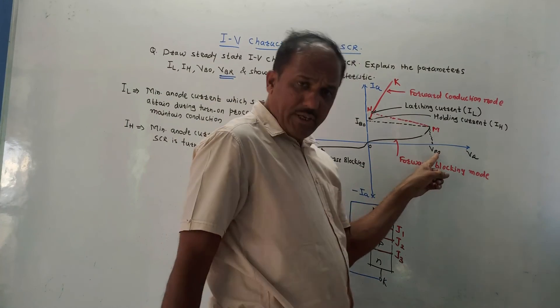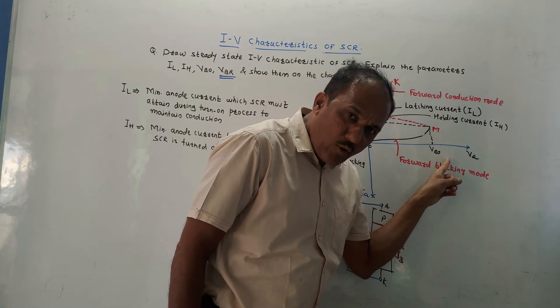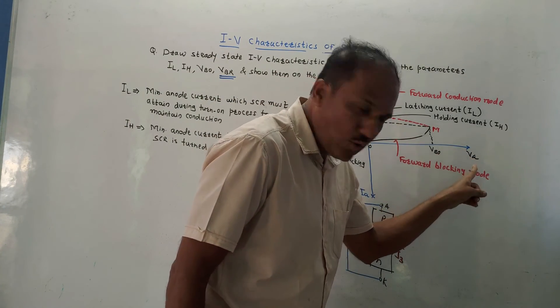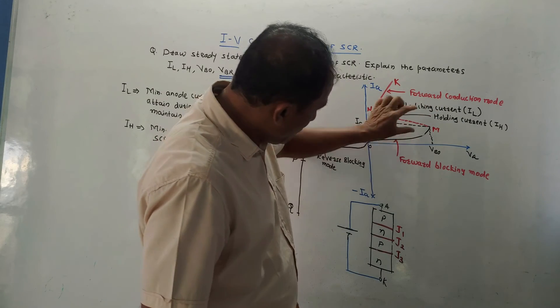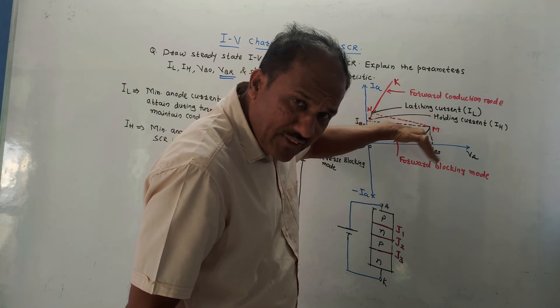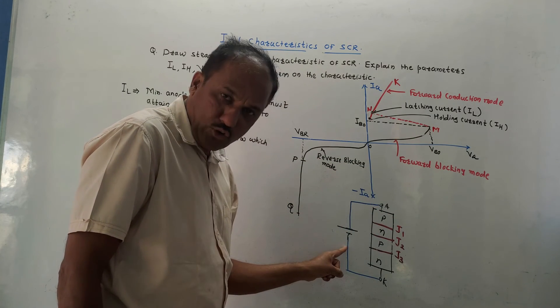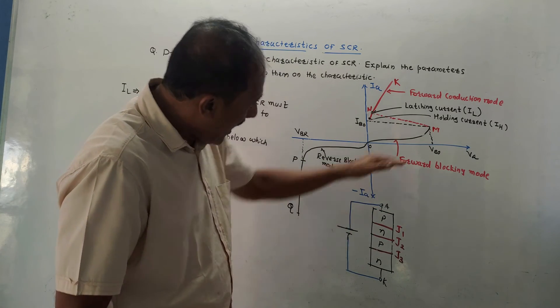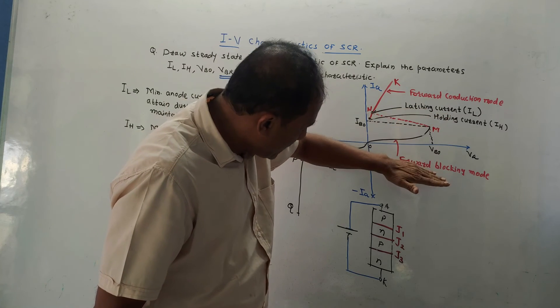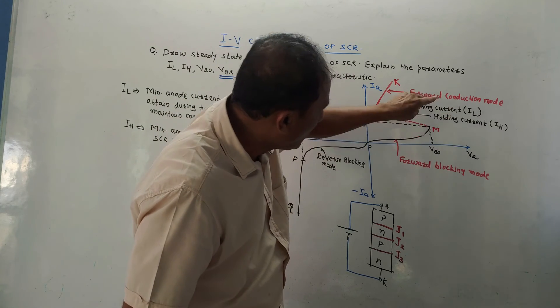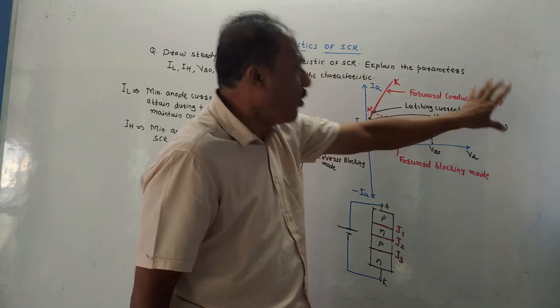This term VBO is known as forward breakover voltage, breakover voltage which is in the forward region. So it is the minimum voltage, I mean, it is the minimum voltage applied between anode and cathode which is a forward voltage. After that, the mode changes from forward blocking mode to the forward conduction mode.